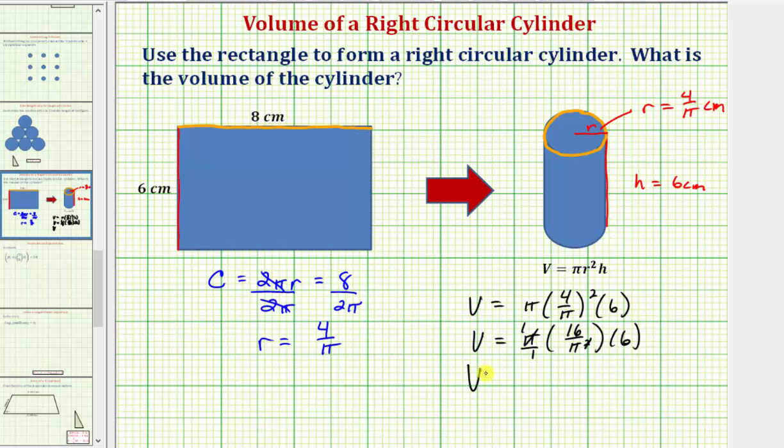And now multiplying, the volume V is going to be equal to this six is six over one. So the numerator is sixteen times six, which is ninety-six. The denominator is just π, so the volume is exactly ninety-six divided by π, and the units would be cubic centimeters.